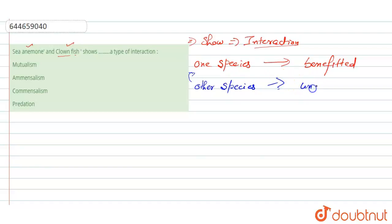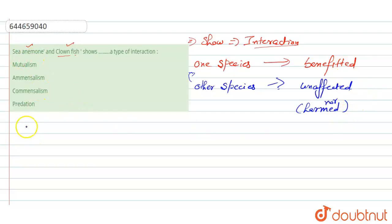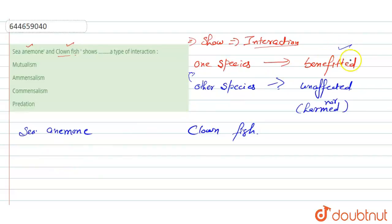The other species, which interacts with the first one, remains unaffected — that is, remains neutral, meaning they are neither benefited nor harmed. So the sea anemone and the clown fish show this kind of relationship.